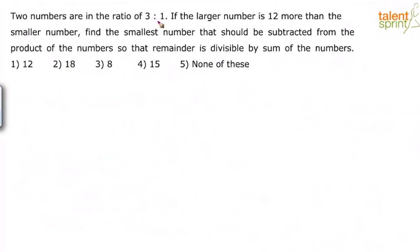Two numbers are in the ratio of 3 to 1, and the larger number is 12 more than the smaller number. Find the smallest number that should be subtracted from the product of the numbers so that the remainder is divisible by the sum of the numbers. Options given: 12, 18, 8, 15, or none of these.